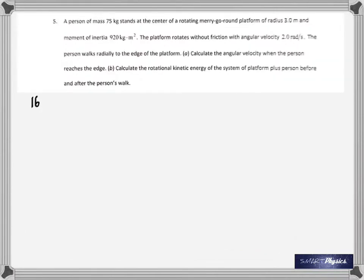If you don't visualize the problem, you're not going to do it. A person is standing at the center of the rotating merry-go-round. The radius is three meters—I could even visualize that it's big. The moment of inertia is 920—that's huge, because the mass of this thing should be really big. The platform rotates without friction with an angular velocity, and the person walks radially to the edge of the platform. What do you mean by radially? Means along the radius. He could have walked zigzag—is he doing that? No, he's going straight from the center to the edge along the radius. You have to see that, and that's a very important point in this problem.